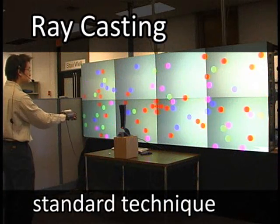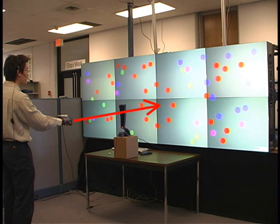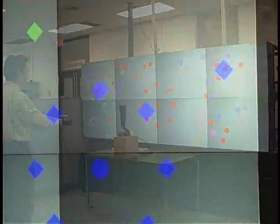On a large digital wall display, freehand selection can be done by casting a ray from your hand onto the display. This can be difficult for small targets as you need to be very precise in your pointing.